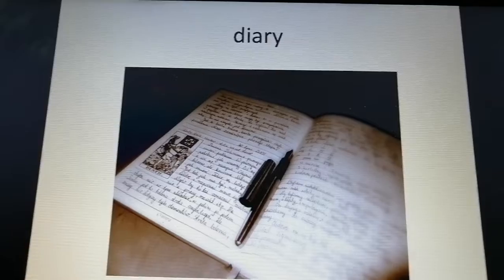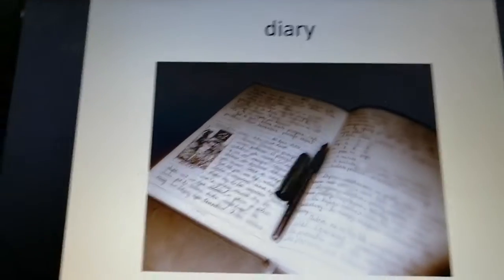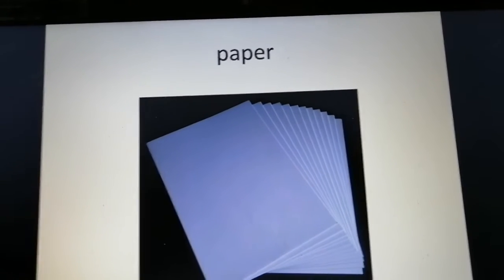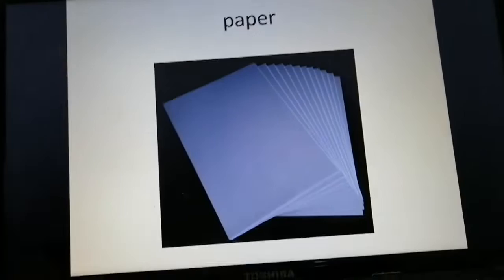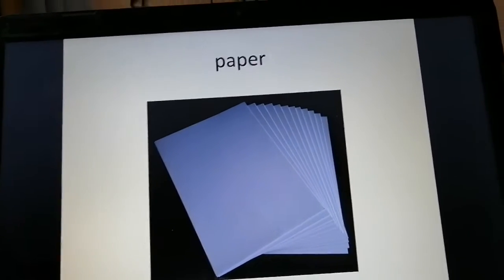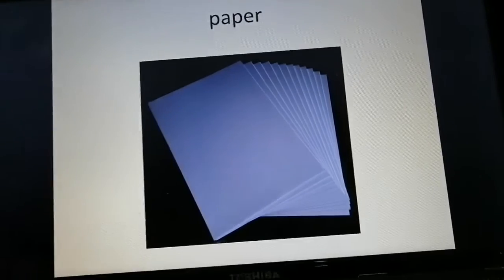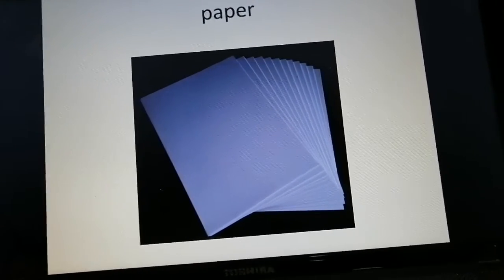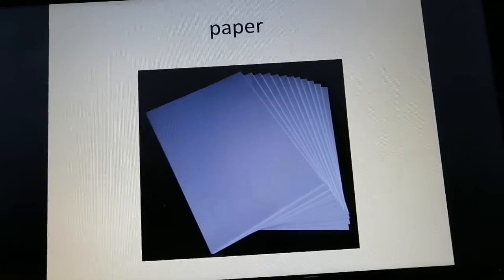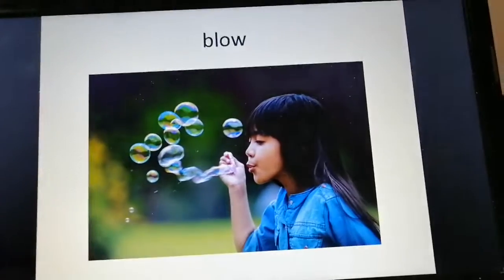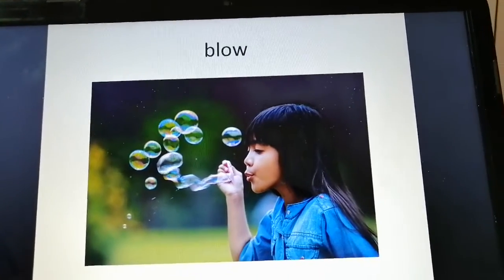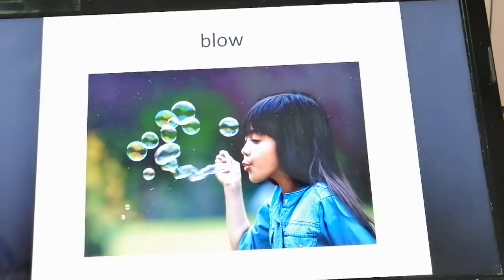Do you have a diary? Now, paper — this thin, flat, white material we use for writing. Paper is what we use for writing. Next: blow. Blow means to produce or force air out through your mouth.